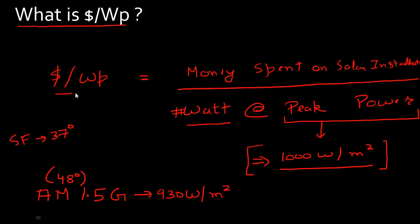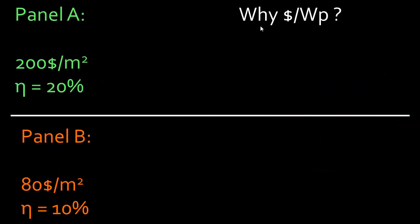So now that we understand dollar per peak watt, why do we need this unit? Because we don't pay for electricity in dollar per watt — we pay for it in cents per kilowatt hour. The reason why we need this dollar per watt unit is to compare different technologies.